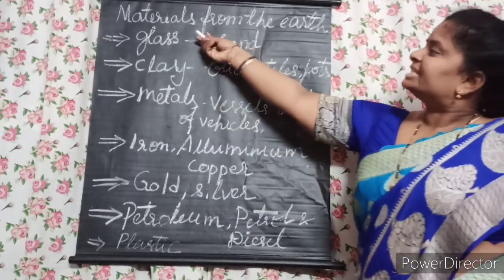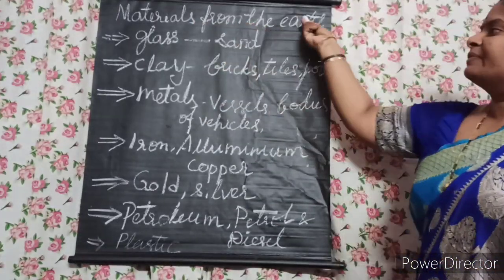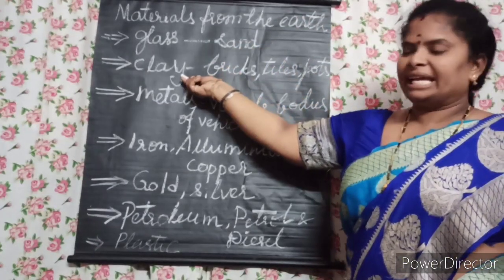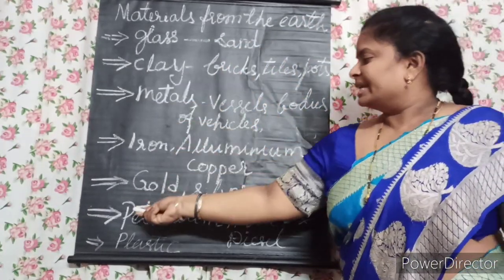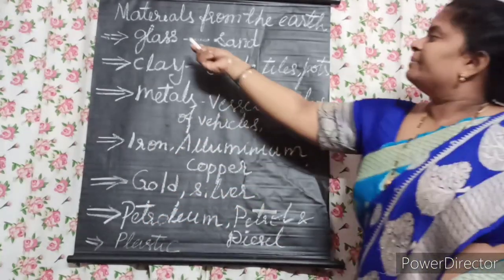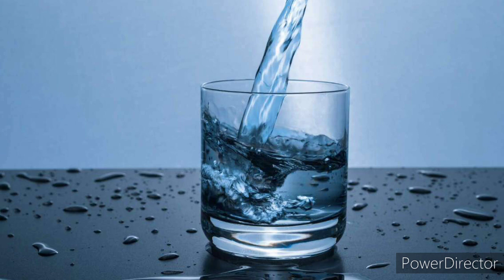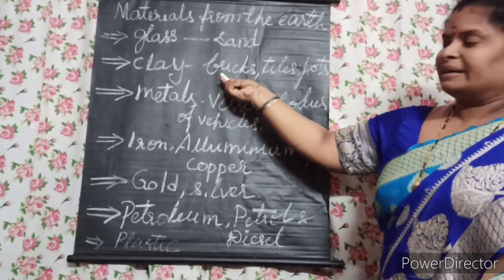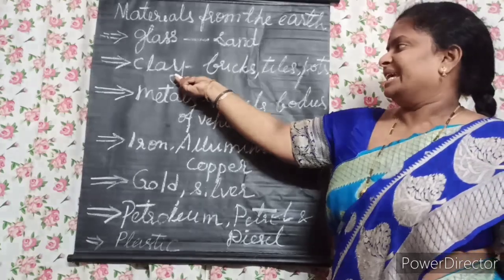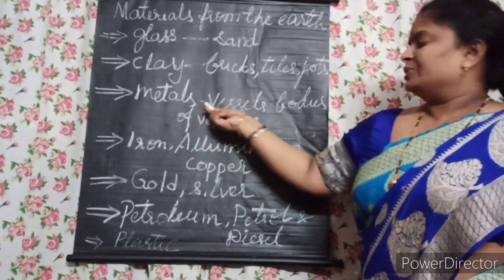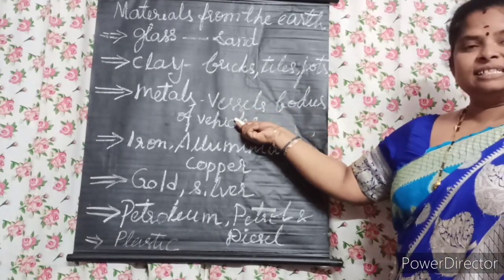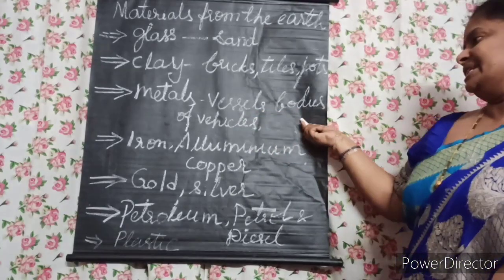Now let us see materials from the earth. We get sand, clay, metals, and petroleum from the earth. We make glass from sand, and we make bricks, tiles, and pots from clay. Metals are used to make vessels, bodies of vehicles, coins, and more.